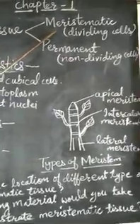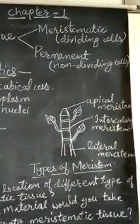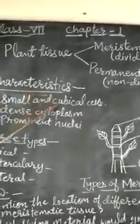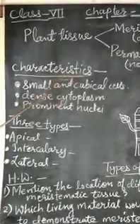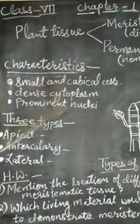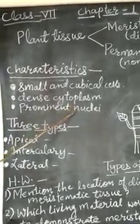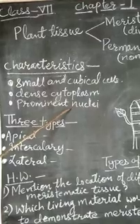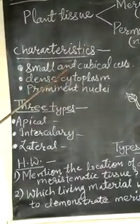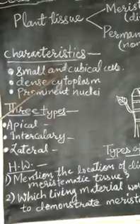Meristematic tissue contains cells with special characteristics. They are small and cubical in shape. They have a dense cytoplasm and a prominent nucleus, which help them to divide again and again. The arrangement of cells is compact, meaning they have no intercellular space.